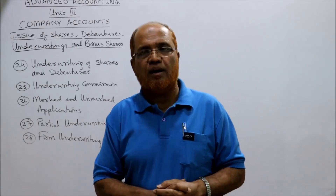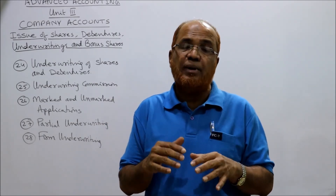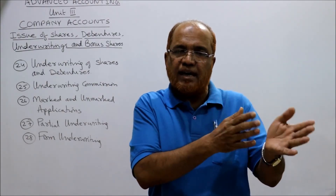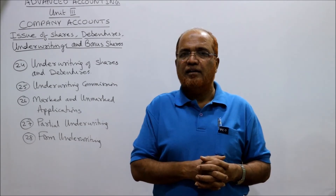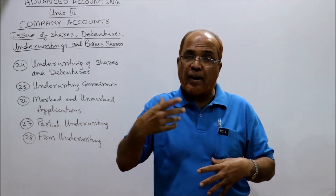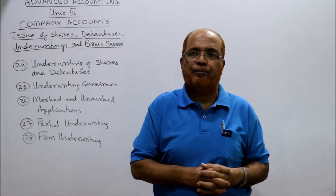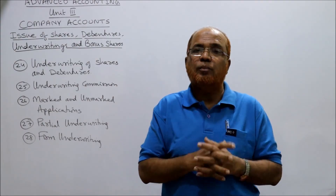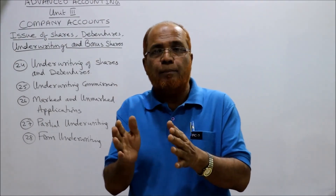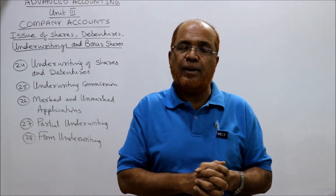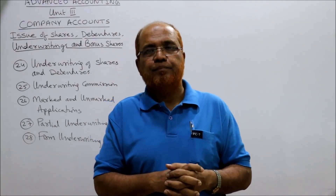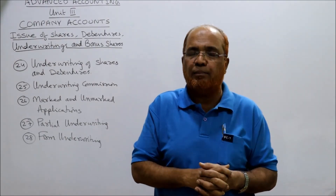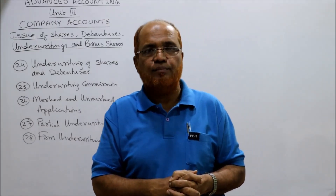The last topic is firm underwriting. When the underwriters agree to take some extra shares apart from the deficiency they are obligated to cover, it is called firm underwriting. For example, an underwriter says: we are the underwriters and will take up the deficiency, but apart from that, we also want to purchase 10,000 shares in our own name. This purchase of 10,000 shares is apart from and in addition to their obligation to meet the deficiency. This is called firm underwriting — the underwriters subscribe a specified number of shares over and above the deficiency shares.